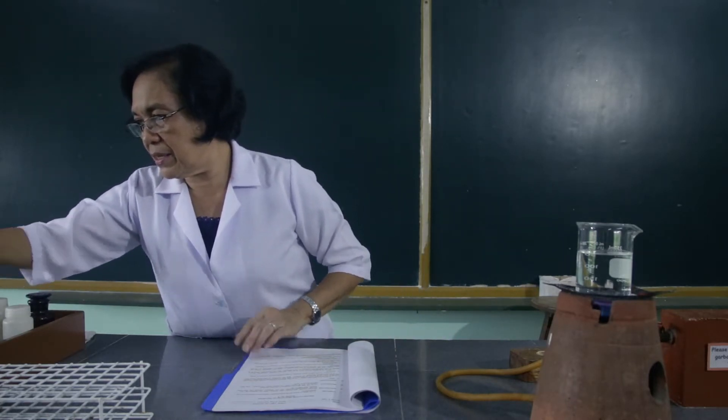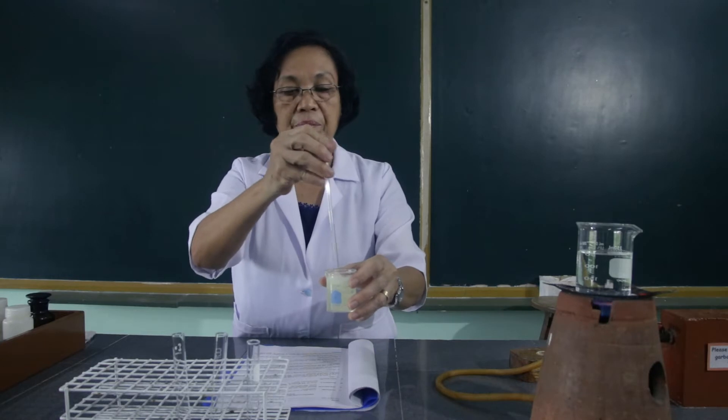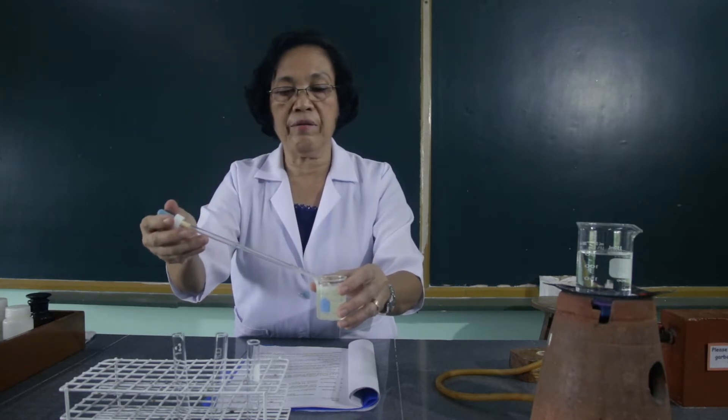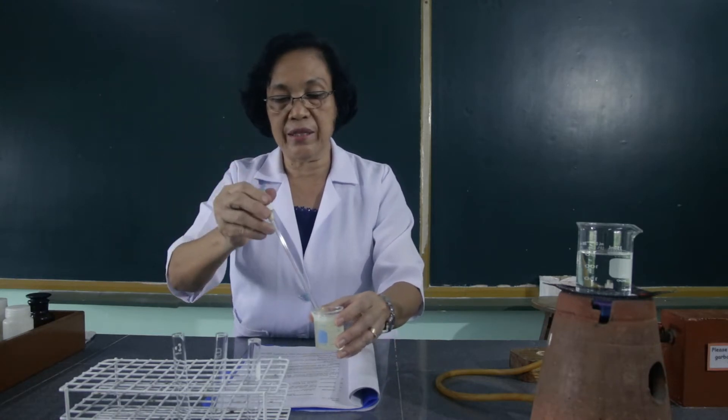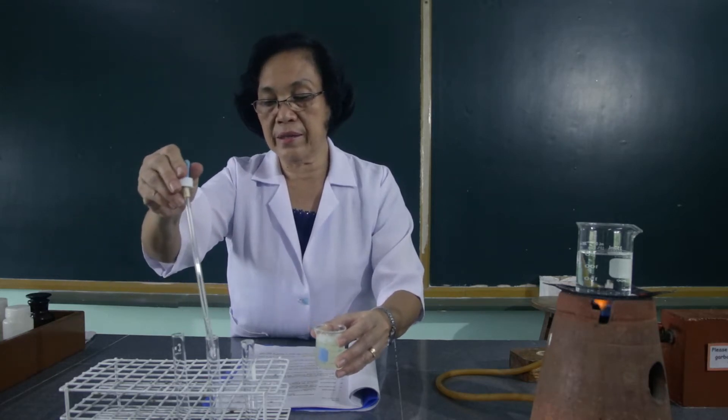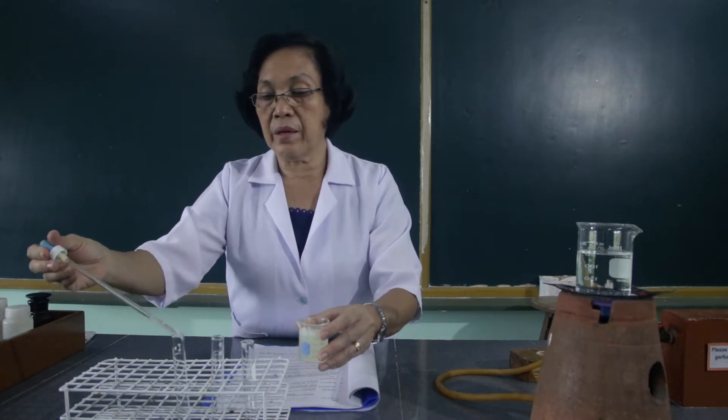For the first method of precipitating the protein, by heating, we will get three test tubes and fill each with 1 ml of the egg albumin. So this is the egg albumin. We are going to get 1 ml of the egg albumin and place this to the test tube. Then to the second test tube, we will fill this with egg albumin. And to the third test tube, fill this with 1 ml of the egg albumin.